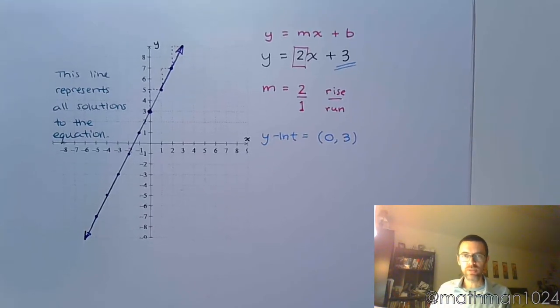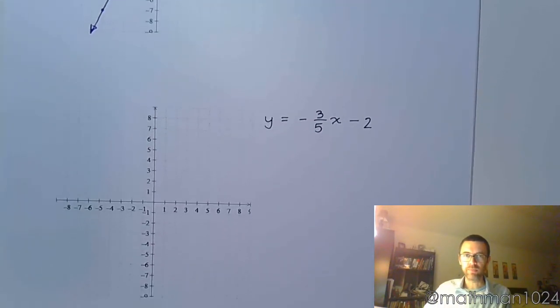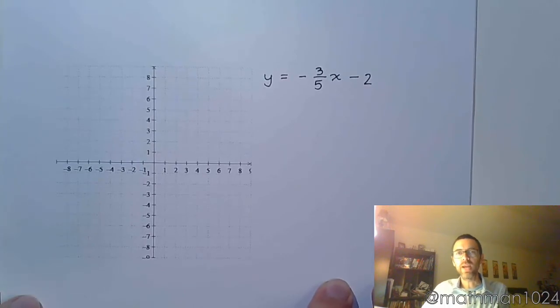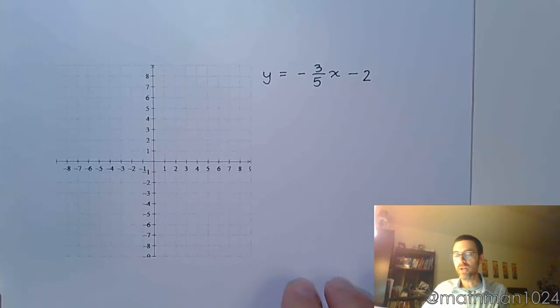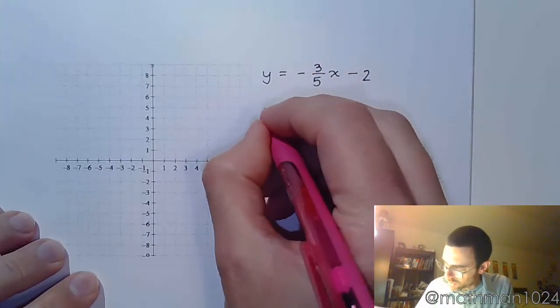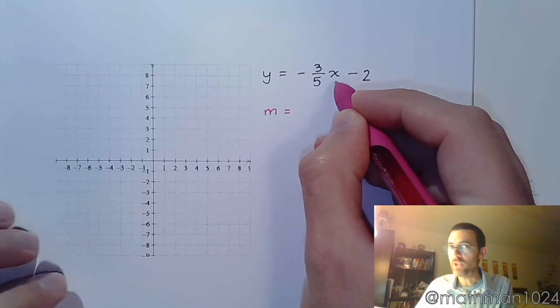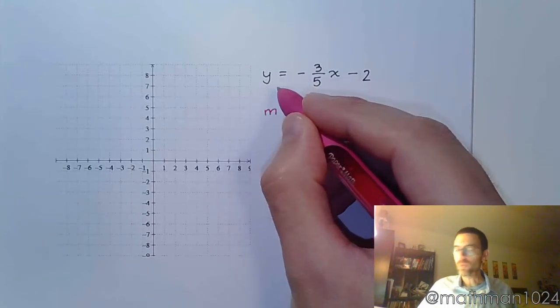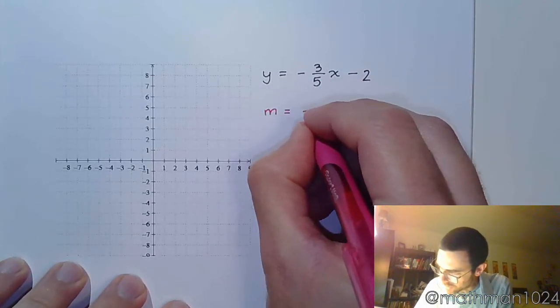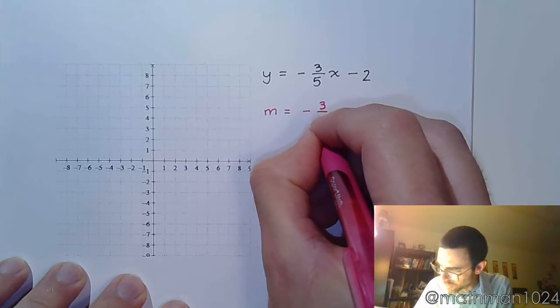Let's take a look at this next example. Y is equal to negative 3 fifths x minus 2. Again, this is in slope-intercept form, so we can easily pick off the slope because it's the coefficient of our x term. You can only do this if it says y equals.